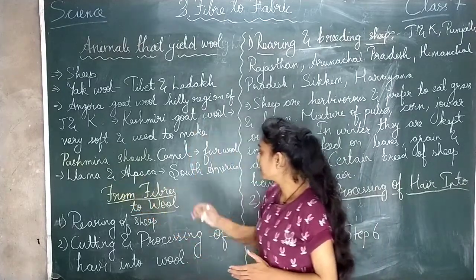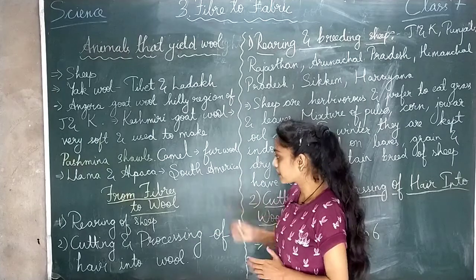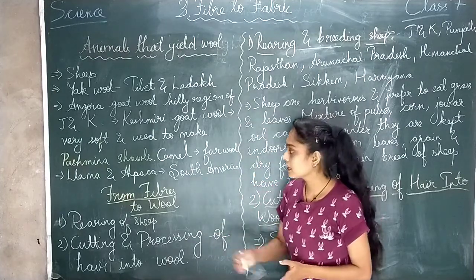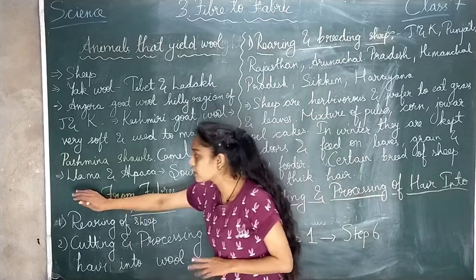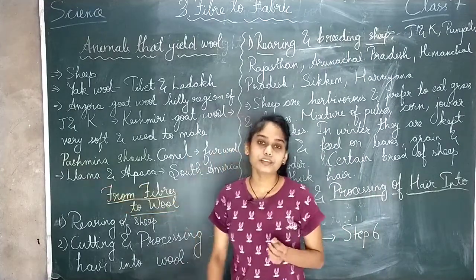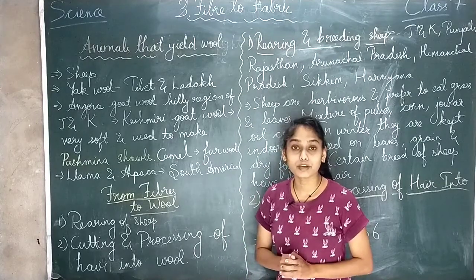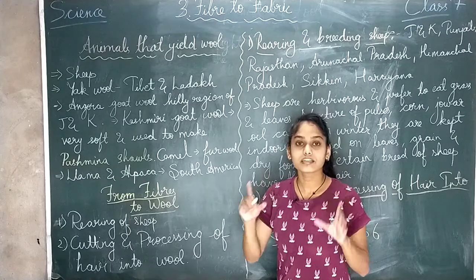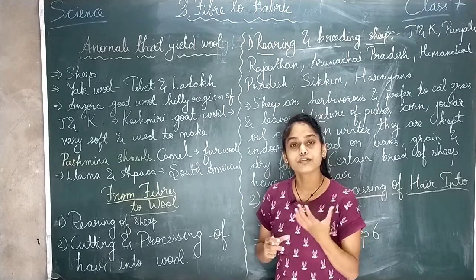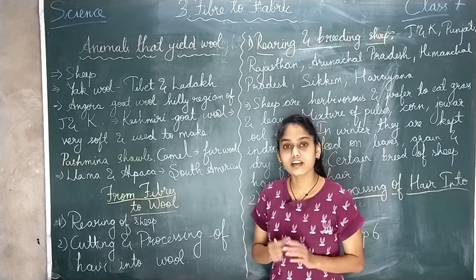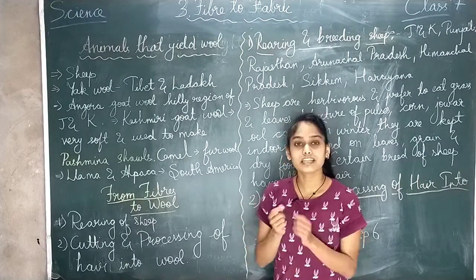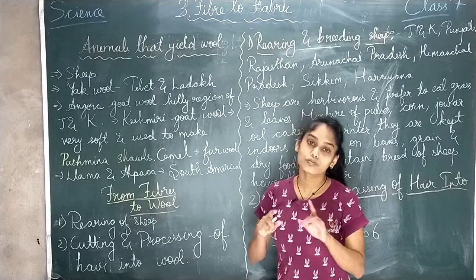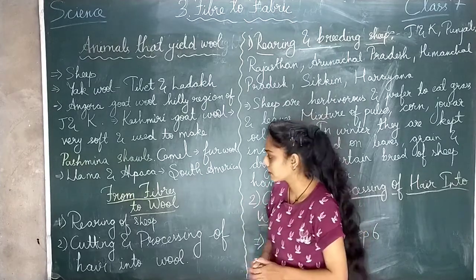Llama and Alpaca, which are found in South America, their wool is also used to make woolen fabrics. So you will understand that the fur of these animals is what we call wool, and people convert it into yarn — that is, the woolen bundles you get in the shop. From that yarn, by knitting, a sweater is made, and that we call fabric.